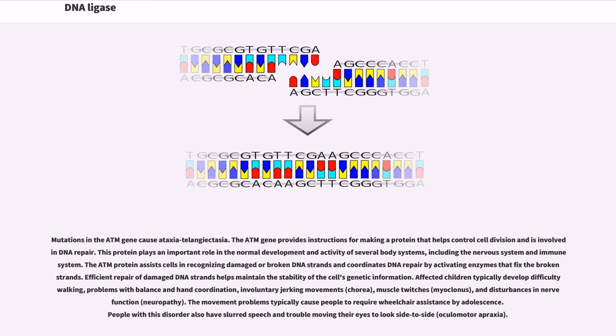Efficient repair of damaged DNA strands helps maintain the stability of the cell's genetic information. Affected children typically develop difficulty walking, problems with balance and hand coordination, involuntary jerking movements chorea, muscle twitches myoclonus, and disturbances in nerve function neuropathy. The movement problems typically cause people to require wheelchair assistance by adolescence. People with this disorder also have slurred speech and trouble moving their eyes to look side to side, oculomotor apraxia.